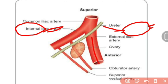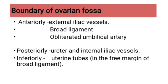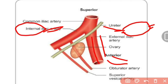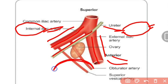Anteriorly, the ovarian fossa is bounded by the external iliac artery and vessels and the obliterated umbilical artery. Posteriorly, it is bounded by the internal iliac artery, vein, and ureter. Inferiorly, it is bounded by the fallopian tube in the free margin of the broad ligament.